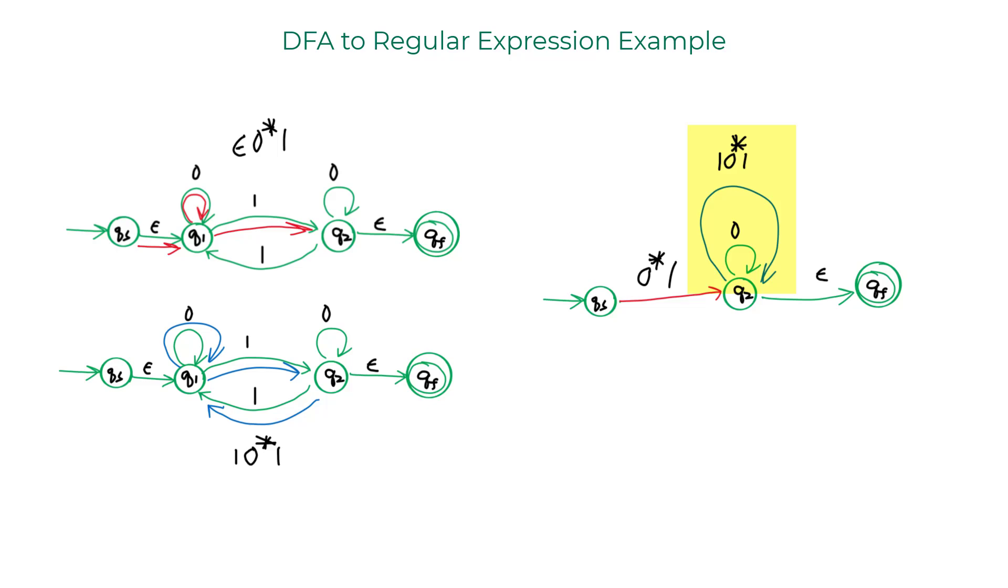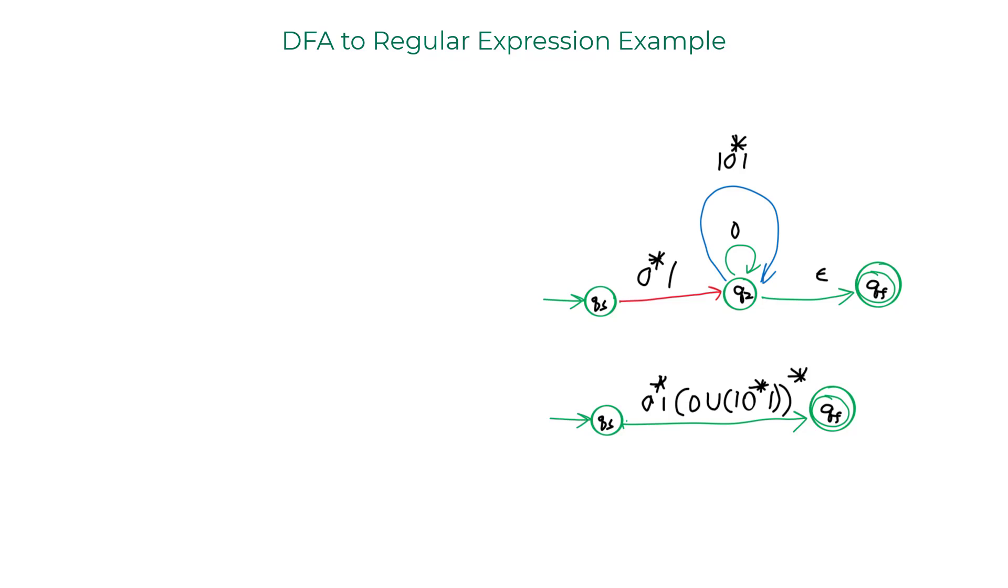So the blue loop as well as the green loop are in parallel. So you can take the union of those two. And then finally you can end up with this regular expression that connects Qs with Qf. So this is the regular expression that describes the original DFA that we had earlier.